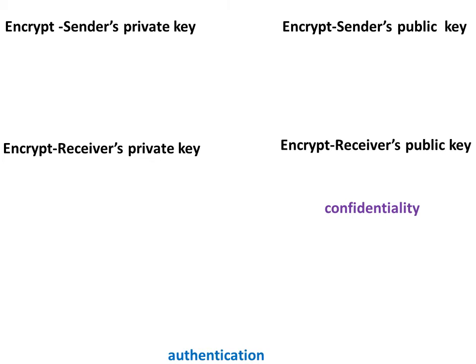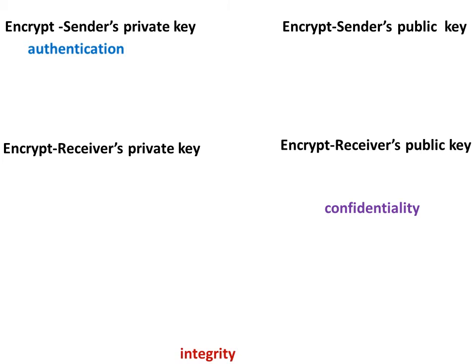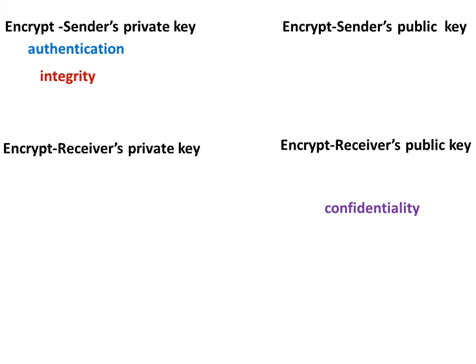For authentication: the sender will have something unique, which is known as the sender's private key. For integrity: again, it goes to the sender's private key. For non-repudiation: again, the answer is the sender's private key.